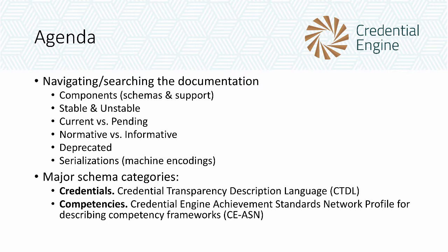I'll be using some terminology and I want to pause here and talk about it because it will come up as we go through this tour. Properties and classes in the CTDL — the Credential Transparency Description Language — and in a companion vocabulary called the Achievement Standards Network, are defined as RDF properties and classes. RDF stands for Resource Description Framework from the W3C, the World Wide Web Consortium, which is a vocabulary for describing data on the web in a linkable manner.